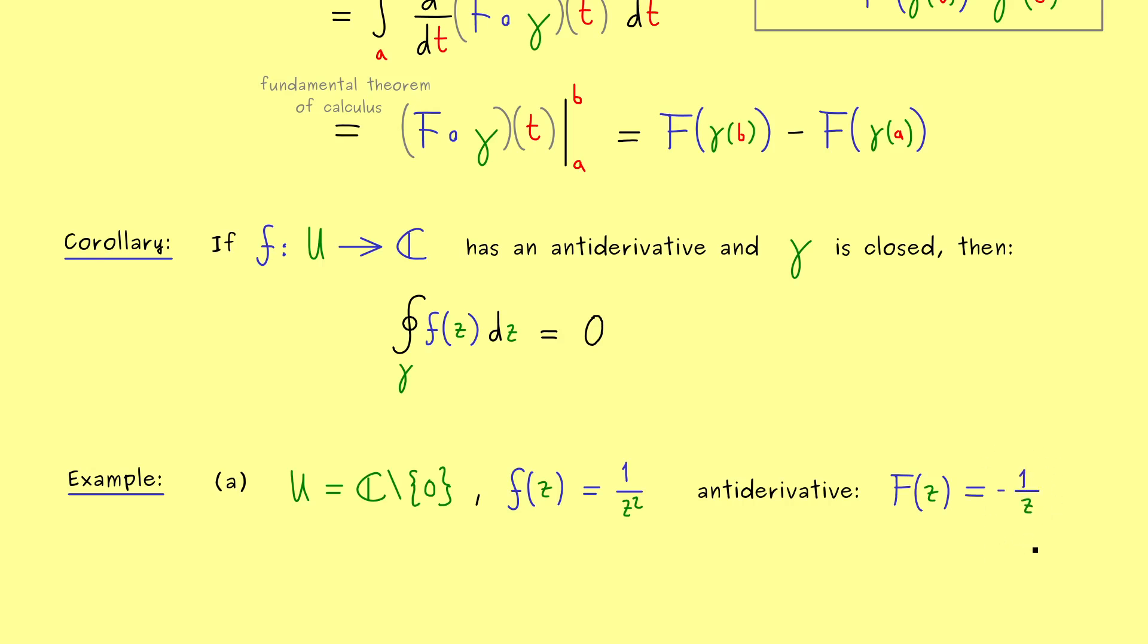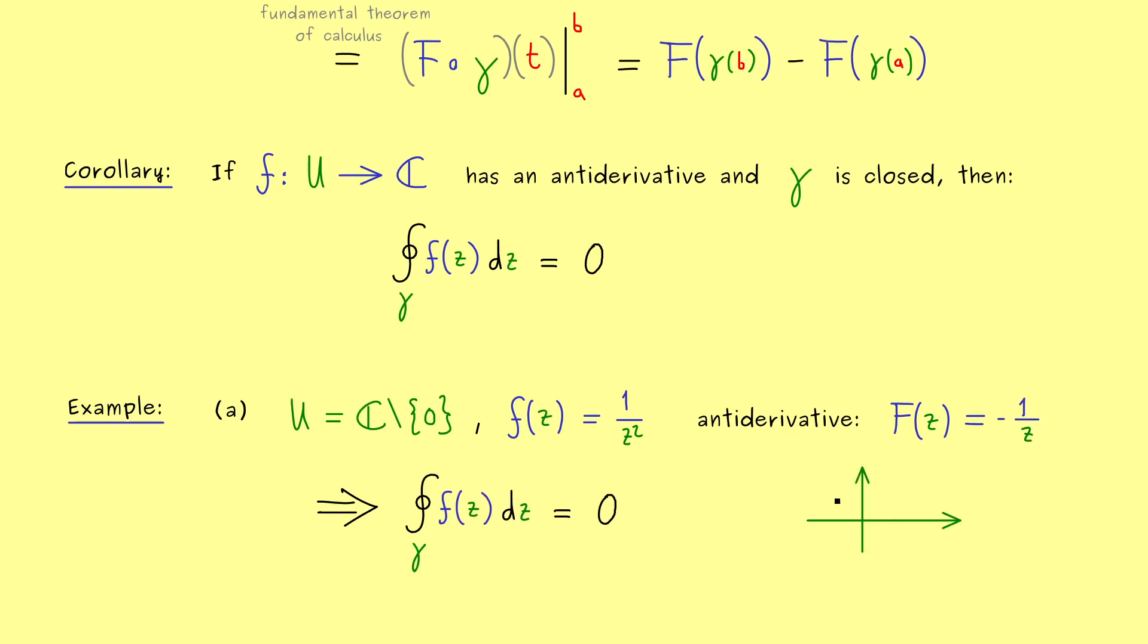Namely this one will be minus 1 divided by z. Because the complex derivative of this one is exactly 1 over z squared. And now we can conclude with the corollary above that the complex integral is always zero when the curve gamma is closed. For example this fact also holds when we go around the origin. So we don't have to calculate the integral at all. Because we already know we get out zero because we have an antiderivative.